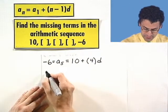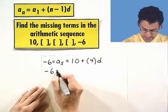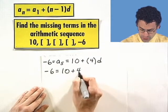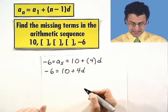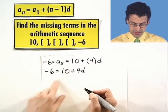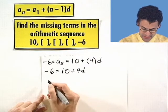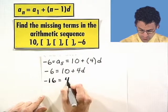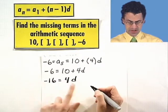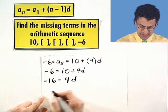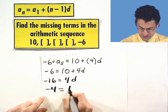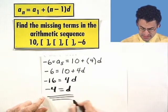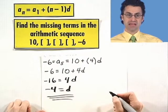So if I do that, what do I see? I see negative 6 equals 10 plus 4d. So I'll subtract 10 from both sides to undo the 10 here. So I see negative 16 equals 4d. And if I divide both sides by 4 to undo the multiplication by 4, I see that negative 4 equals d. That means that that common difference is negative 4.